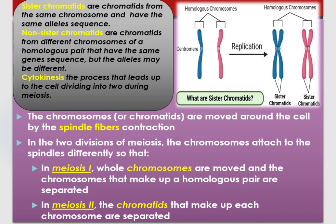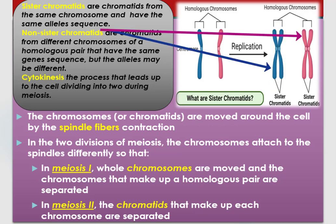Sister chromatids are chromatids from the same chromosome and have the same allele sequence. Non-sister chromatids are chromatids from different chromosomes of a homologous pair that have the same gene sequence, but the alleles may be different. Cytokinesis is the process that leads up to the cell dividing into two during meiosis. The chromosomes or chromatids are moved around the cell by the spindle fibers of microtubules through contraction.